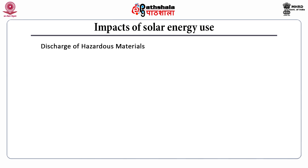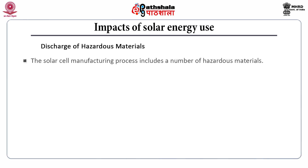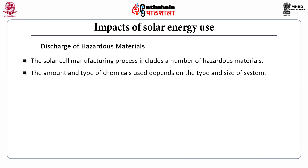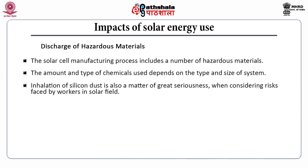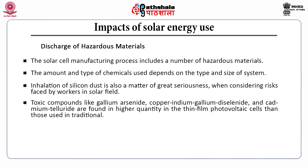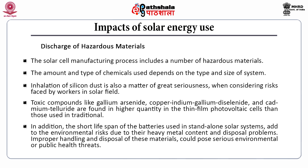The third impact is the discharge of hazardous material. The solar cell manufacturing process includes a number of hazardous materials, and the amount and type of chemicals used depends on the type and size of the system. Inhalation of silicon dust is a matter of great seriousness for workers in the solar field. Toxic compounds like gallium arsenide, copper indium gallium diselenide and cadmium telluride are found in higher quantities in thin film photovoltaic cells. The short lifespan of batteries used in standalone solar systems adds environmental risk due to heavy metal content and disposal problems.